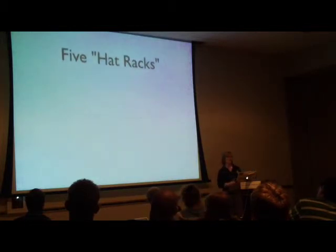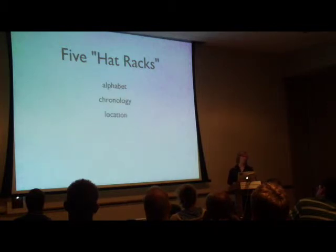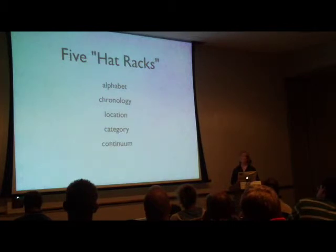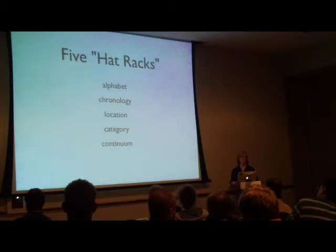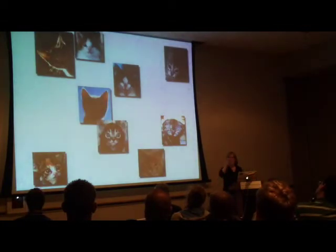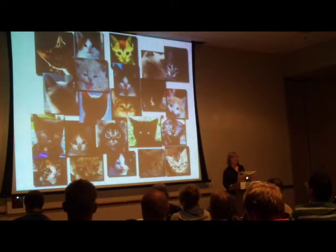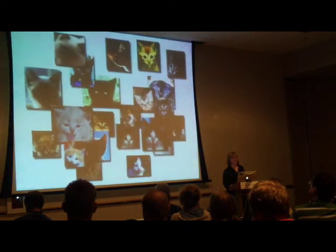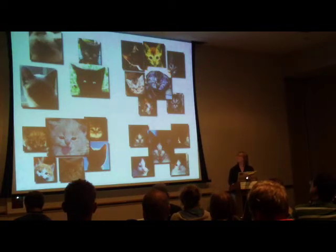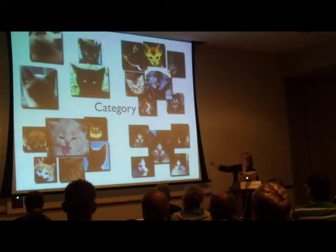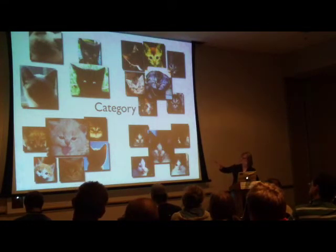There are what in design are called hat racks — five hat racks to organize design. Alphabetical organization, chronological organization, geographic organization, organizing by category or taxonomy, or continuum. This is to take a bunch of stuff and organize it in a way that people can understand. For example, here we have a bunch of kittens in no particular order. We can organize them by category — this also illustrates the concept of chunking, creating chunks of information that are easier to digest. I'm not an expert on cat breeds; I just took the ones that looked kind of similar and put them together.